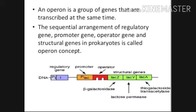An operon is a group of genes that are transcribed at the same time. The sequential arrangement of regulatory gene, promoter gene, operator gene, and structural gene in prokaryotes is called the operon concept. In the given diagram, you can see the regulatory gene, promoter, operator, and structural genes are all present.